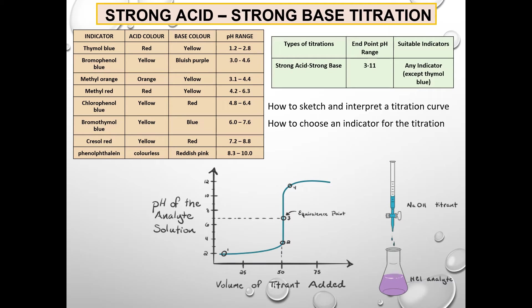Let us see an example of a titration between a strong acid and a strong base. We will use the example of hydrochloric acid and sodium hydroxide. Here you will learn how to sketch and interpret a titration curve and also how to choose an indicator for the titration.